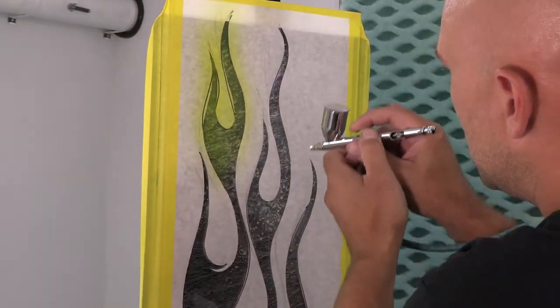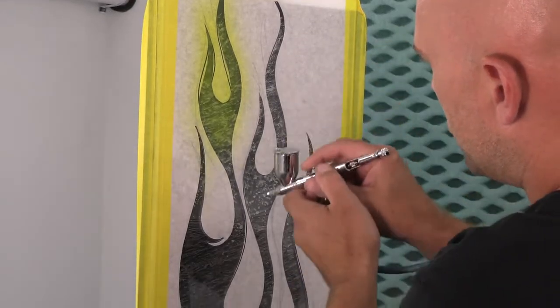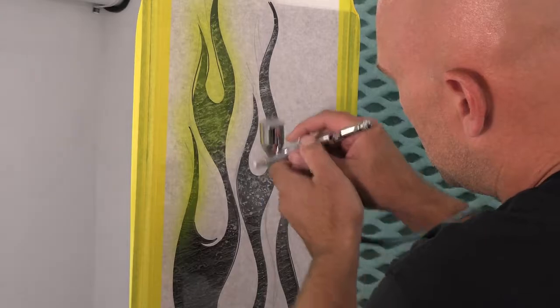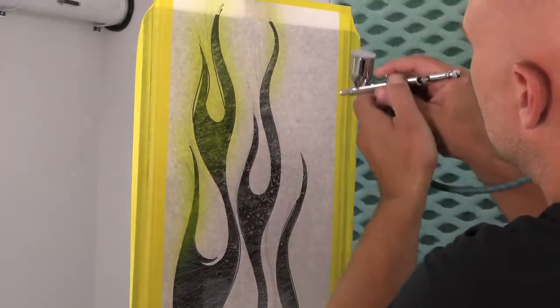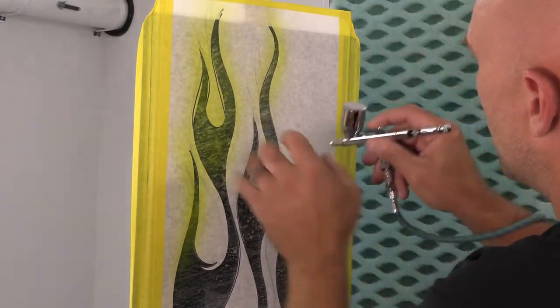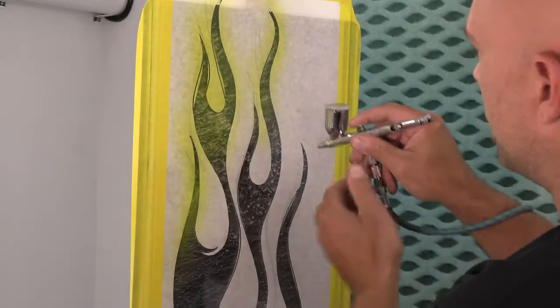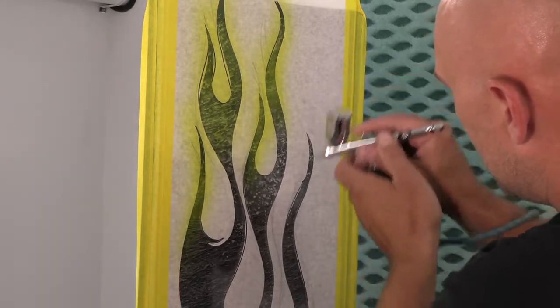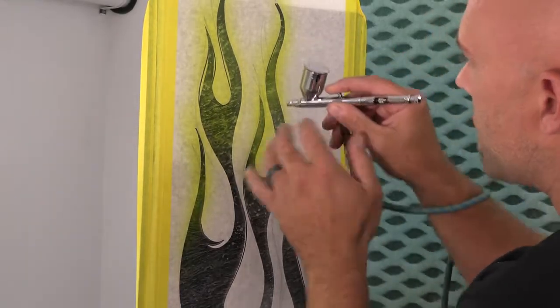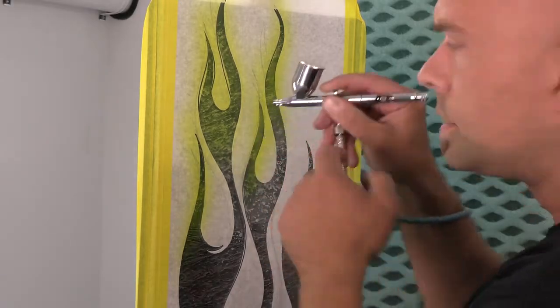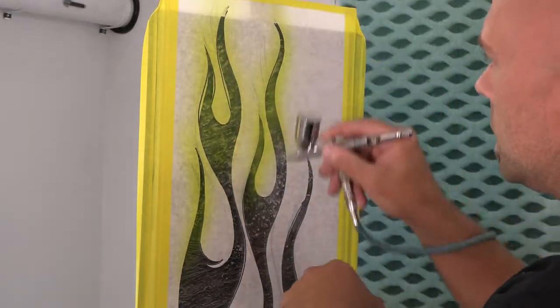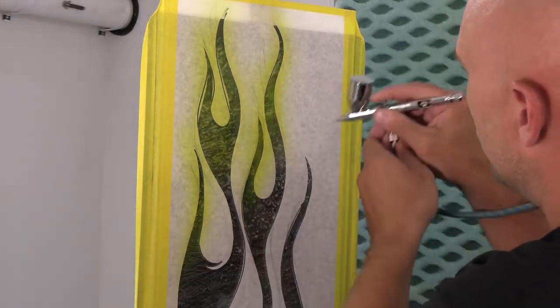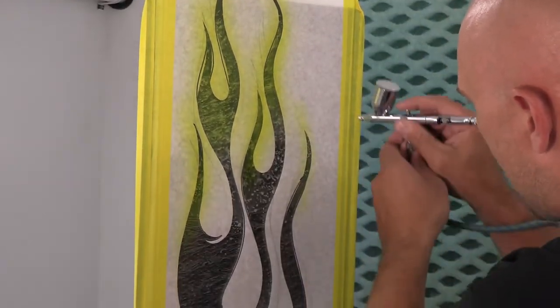I'm going to pick a spot where I want to make that transition to my orange. So I kind of want the tips to be a little more transparent. Like I said, I'm going to darken it up kind of in the body of the flame, a little bit darker in the middle here. And what I'm doing is when I'm not pulling the trigger for paint, I'm still on my air to help just dry this up.